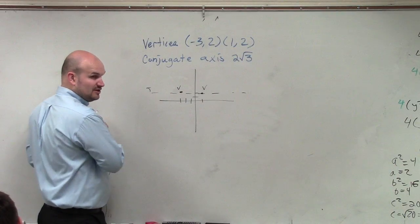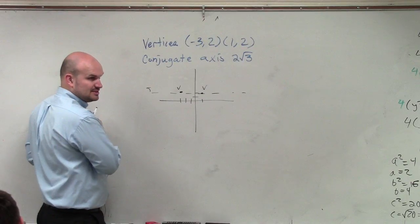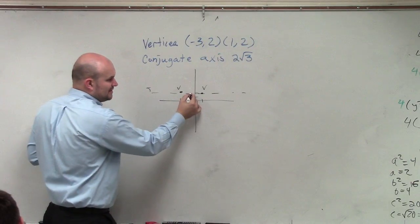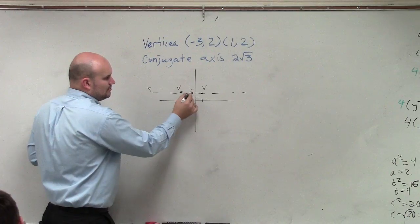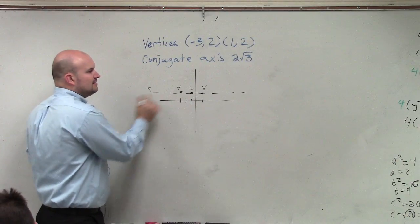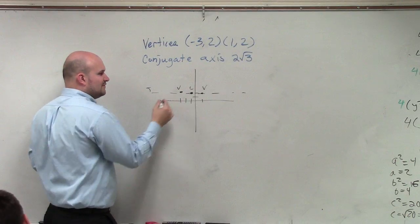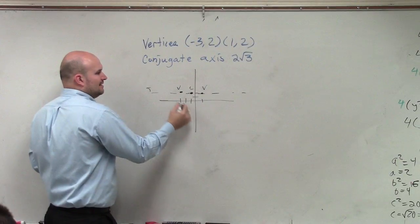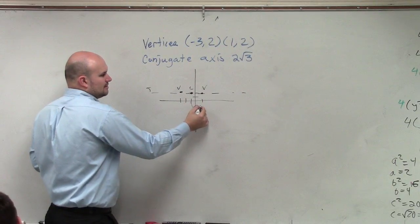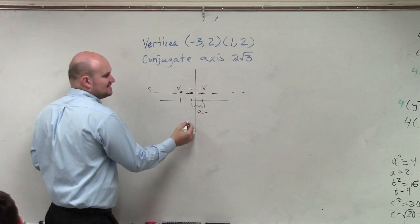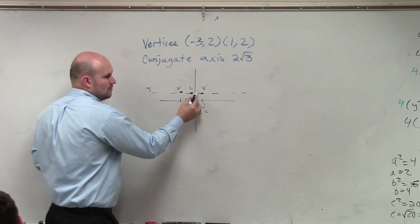The other thing is, now that I know my two vertices, can I figure out where my center is? Yes, the center is always in between your two vertices. So then we know that the distance from the center to your vertices is going to equal a, which in this case equals 2.